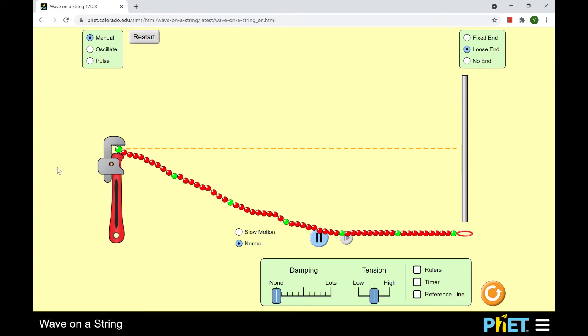You see the left end is a node. The right end is an antinode. From node to the nearest antinode is a quarter of the wavelength.